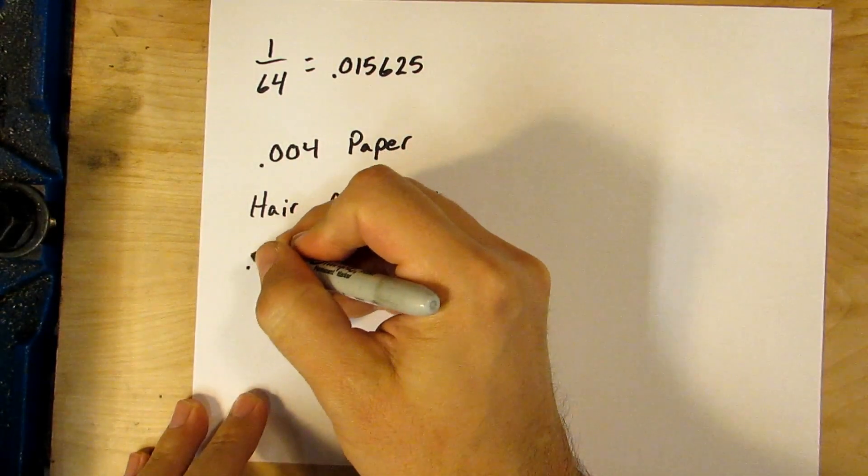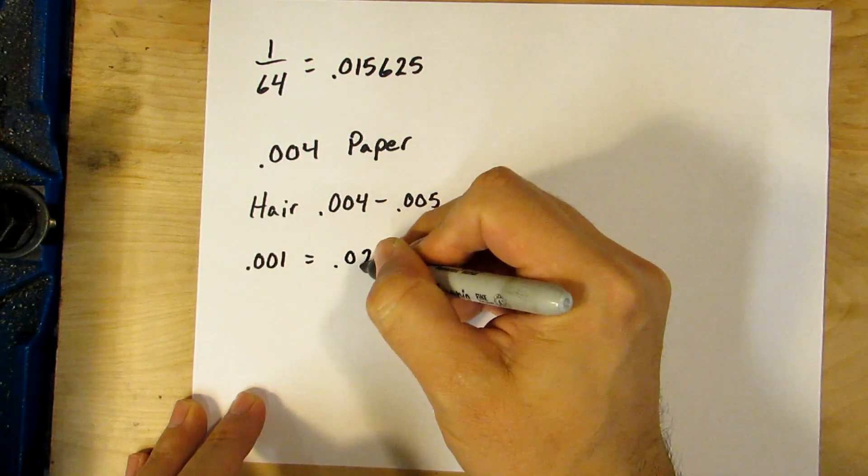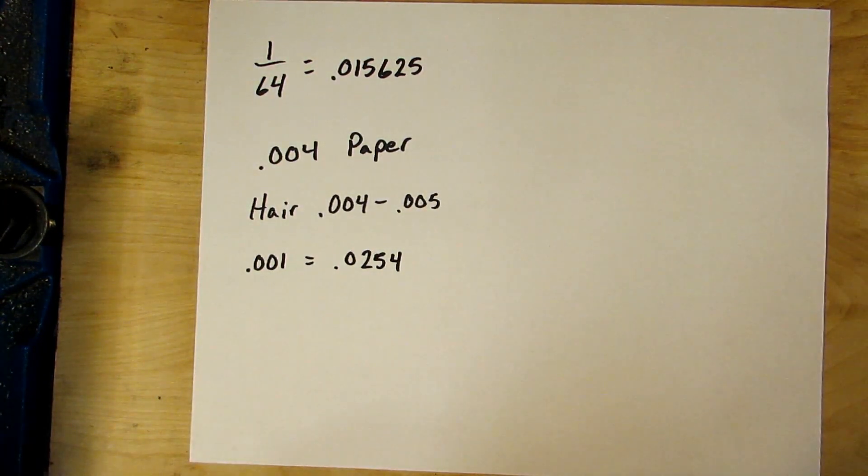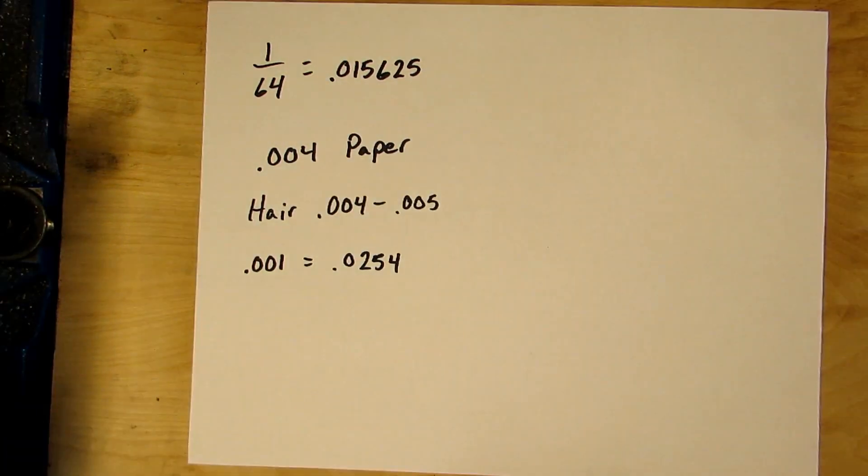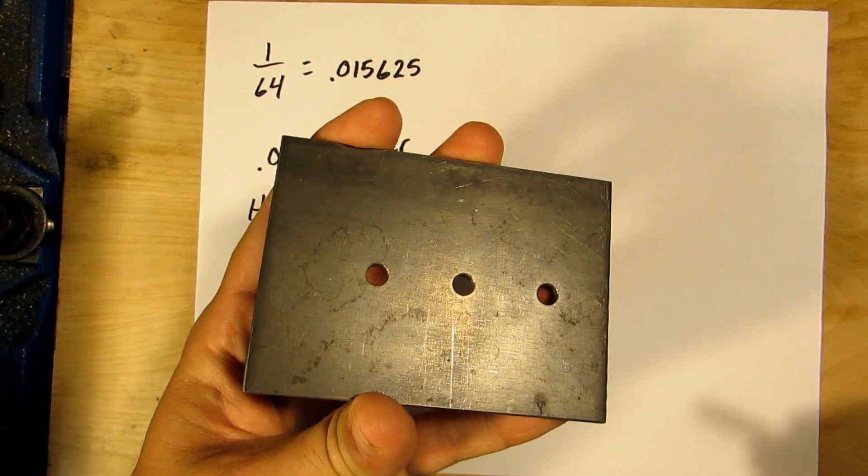So for the metric folks, one thousandth of an inch equals 0.0254 millimeters. There you go, just to give it a little bit more perspective for people who aren't in the inch system. So what does all this thousandth business mean in the real world?